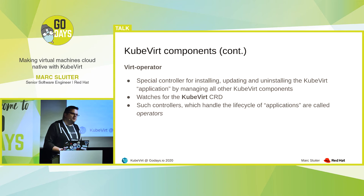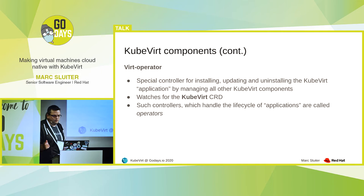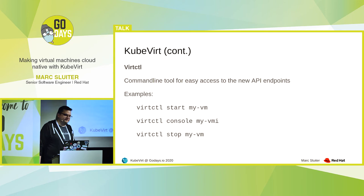And last but not least, we have the virt operator. That one is a special kind of controller because it handles installing, updating, or uninstalling all the other components for you. It does this by creating another custom resource definition called KubeVirt. And when it finds an instance of that CRD, it creates all the other components or updates them. Such controllers which handle the lifecycle of a complete application are called operators. And then just like kubectl, we have virtctl, which you can use for talking to our new REST endpoints — like starting a VM, connecting to the console, or stopping the VM.